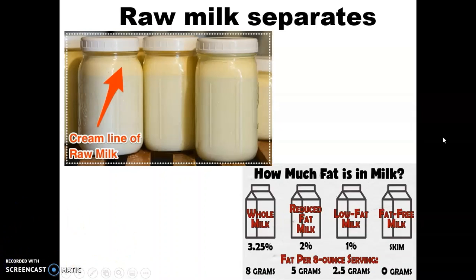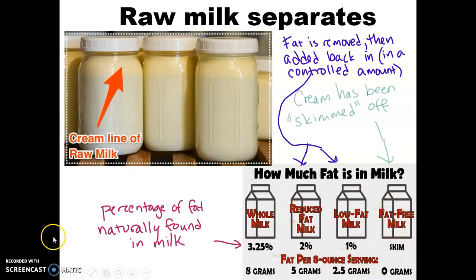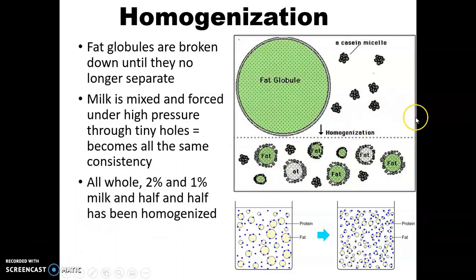So most people do not buy their milk as cream line milk. They buy it as whole or reduced fat or skim milk, and there's a couple processes that it has to go through to get to that state that you're going to buy it in the store. So one thing that I want you to realize with whole milk, it doesn't mean it's like 100% fat. That's like 3.25% fat, and then you can kind of compare that to 2% reduced fat and 1%, and then skim, of course, has no fat in it at all.